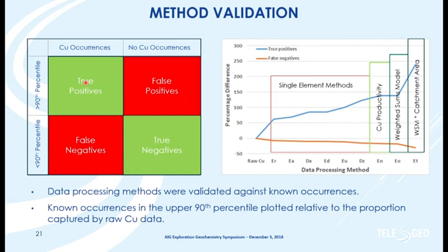We tested this by looking at true positives — copper occurrences occurring in the upper 90th percentile of each processing method. The base example was raw copper. You can see the number of true positives increases with each processing method. Adding productivity — a correction for dilution — it goes up again. Going to a weighted sums model using several elements is an improvement, and correcting the weighted sums model for dilution gives the best response. We're getting over 200 percent more true anomalies from the processed data than from the raw copper data.